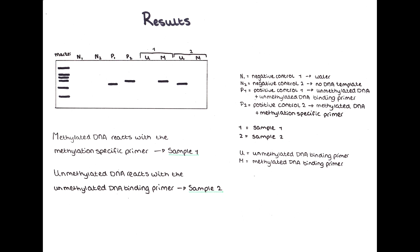Sample 2 does not contain any methylated DNA, which means it will only show up in the unmethylated column and not in the methylated column.